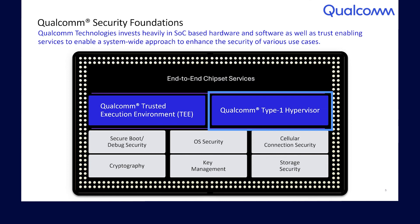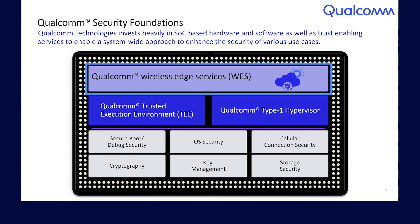Qualcomm Type 1 Hypervisor enables multiple OS environments to run concurrently and in isolation. Cellular connection security framework helps detect and deter cellular attacks. Qualcomm Wireless as a Service provides a set of security services for device authentication, device attestation, and zero-touch provisioning, enabling the use of SOC unique hardware credentials to establish root of trust in edge devices. We will discuss these features in more detail later.